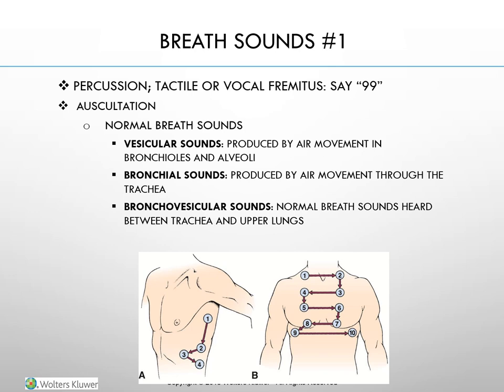Sounds heard with chest wall percussion: A flat or dull sound — high-pitched, little intensity, decreased duration — is heard over solid areas such as a mass or pleural effusion. A dull sound — medium pitch, intensity, and duration — is heard when no air or fluid is in the lung, such as with atelectasis or lobar pneumonia. Tympanic — high-pitched, loud, long duration — normal over stomach and bowel but abnormal over lungs as in pneumothorax. Resonant — low-pitched, loud, long duration — is normal lung sound. Hyper-resonant — lower-pitched, very loud, longer duration — indicates free air in the thoracic cavity, as in emphysema or pneumothorax.